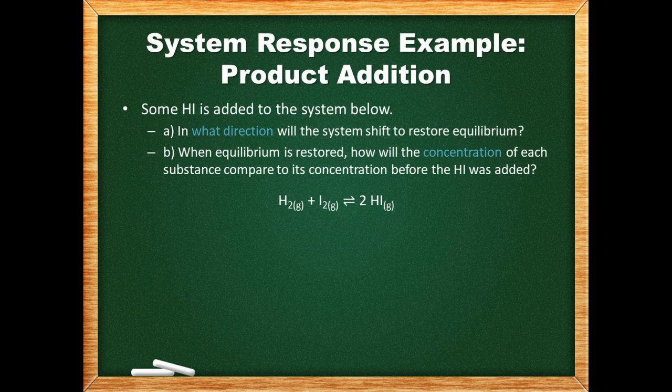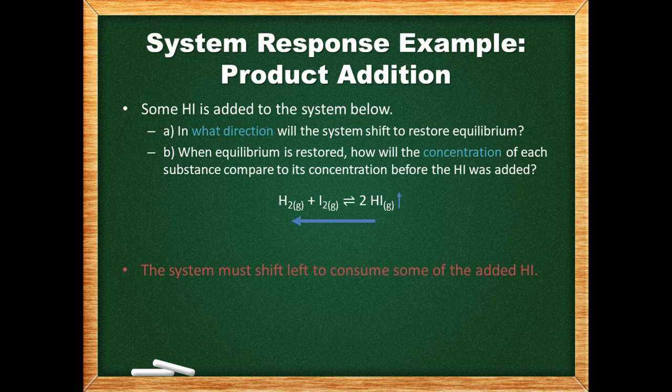This problem involves the addition of a reactant — here, hydrogen iodide gas is being added. We will look at which direction the system will shift to restore equilibrium. The system will consume some of the added hydrogen iodide, so it will shift to the left, toward the reactants.